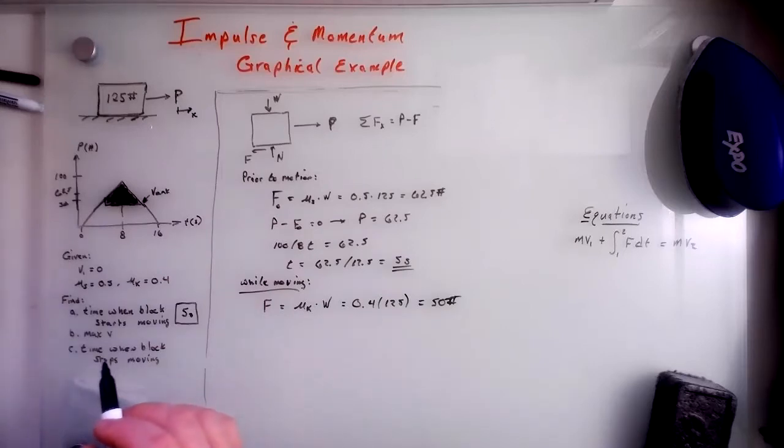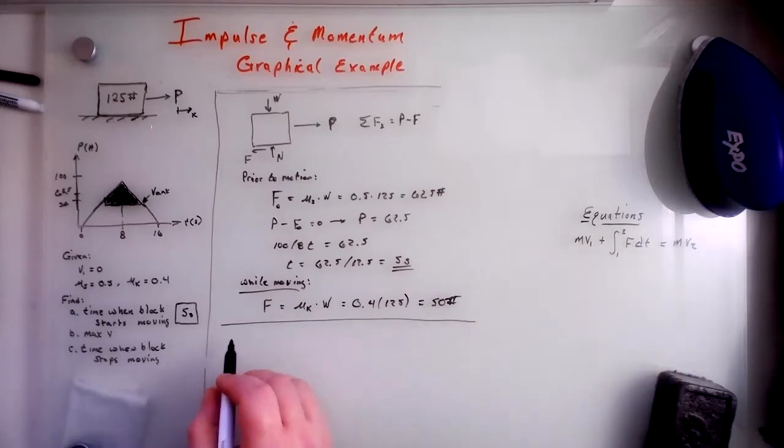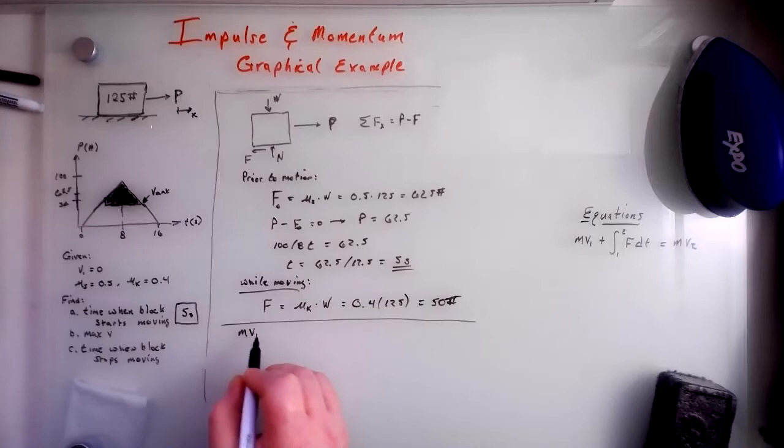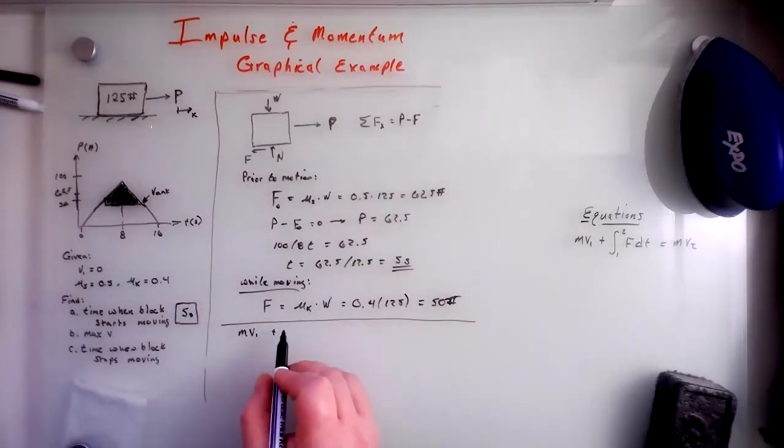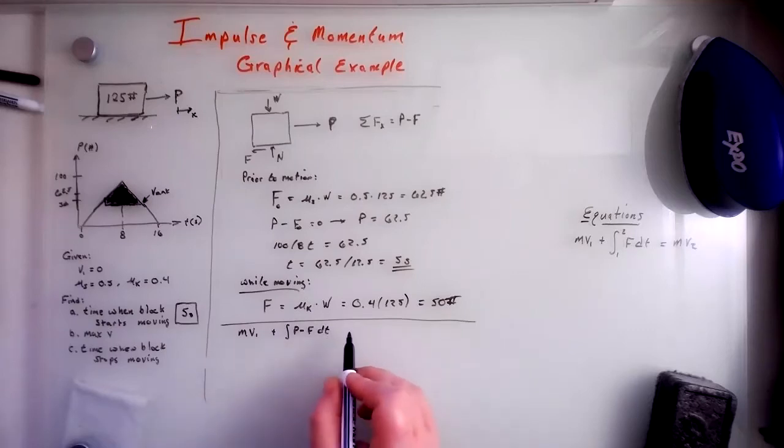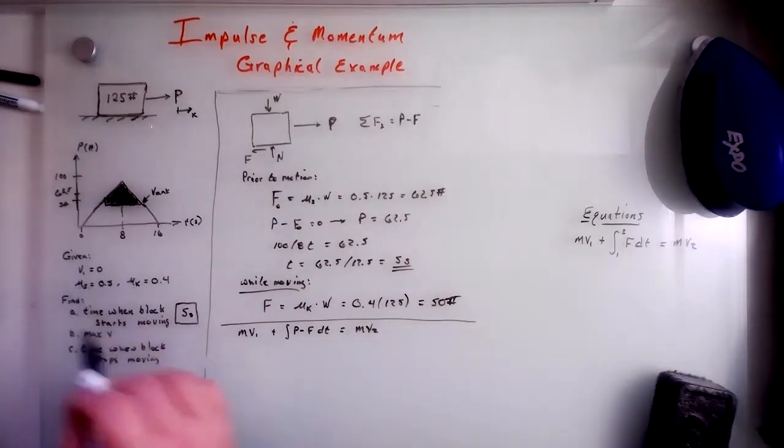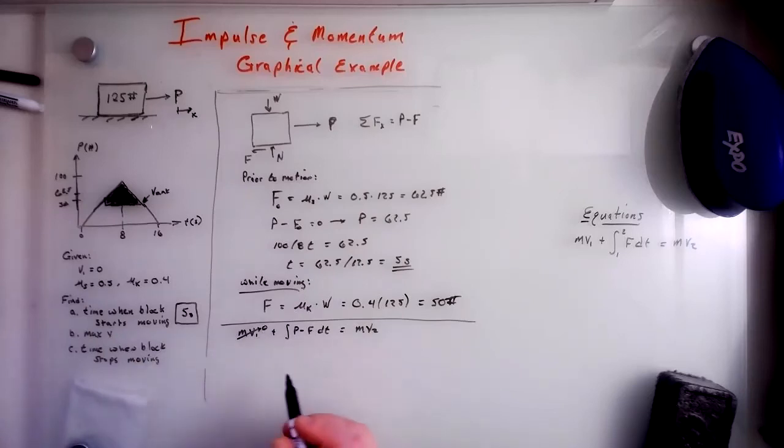So then what we can do is we can go back to our impulse equation, say MV1 plus our impulse. And here, I'm just going to say, let's do this, let's go P minus F DT. And then that's going to equal MV2, right? And again, V1 is zero.